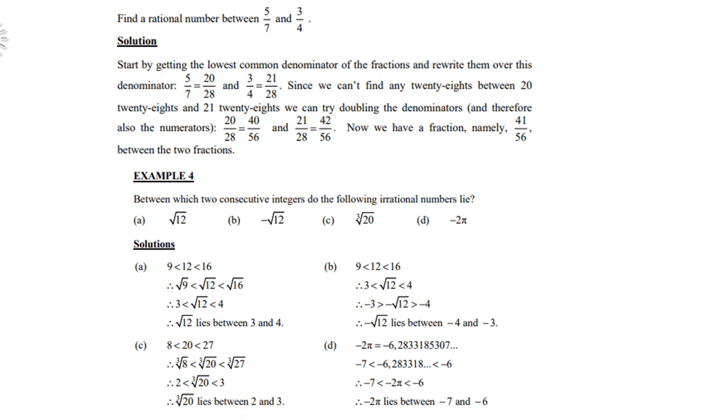If you look at D, minus 2 times pi, well, minus 2 times pi is minus 6.283185 if you use your calculator. And that lies between negative 7 and negative 6. So there you are. Negative 2 pi lies between negative 7 and negative 6.